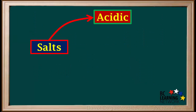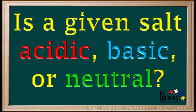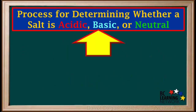A salt can either be acidic, neutral, or basic depending on the hydrolysis of its ions. We're sometimes given the formula for a salt and asked to determine whether it is acidic, basic, or neutral when dissolved in water. There is a step-by-step process we can use to determine whether a given salt is acidic, basic, or neutral in aqueous solution.